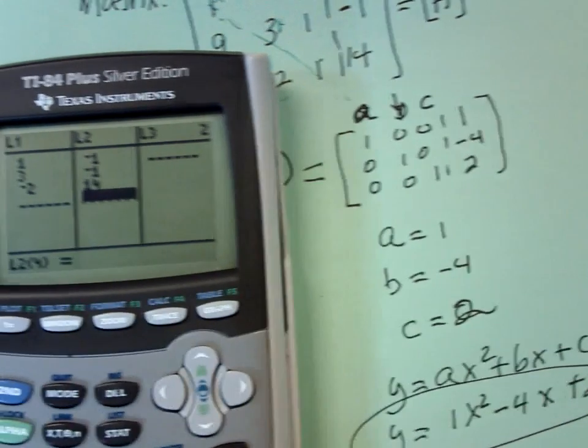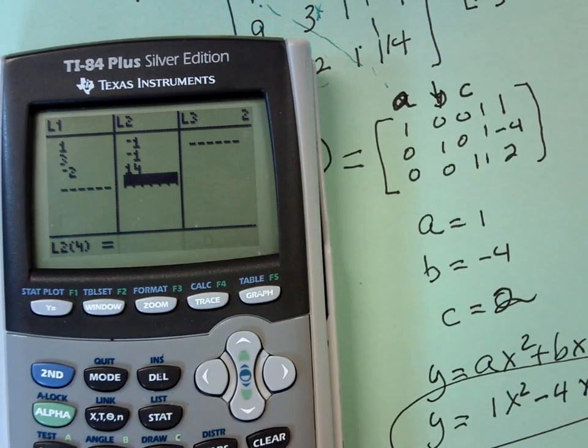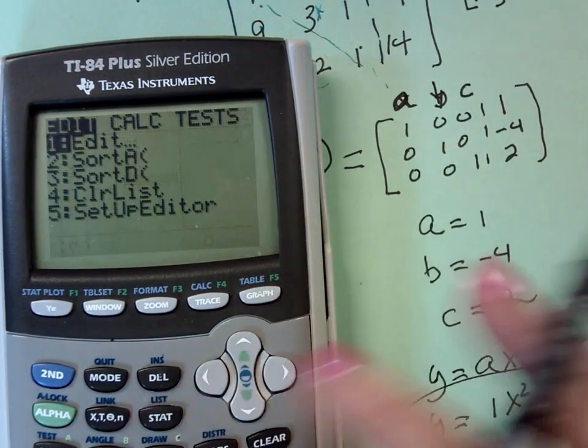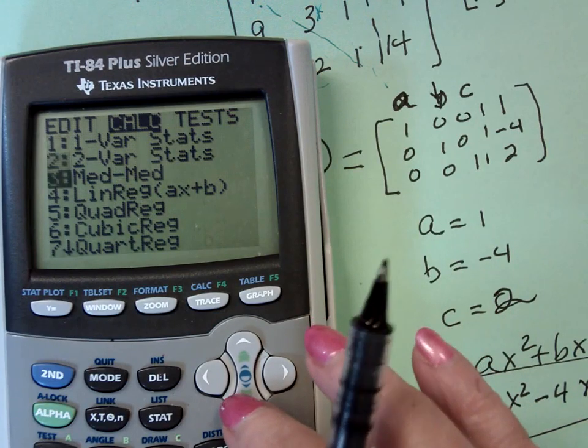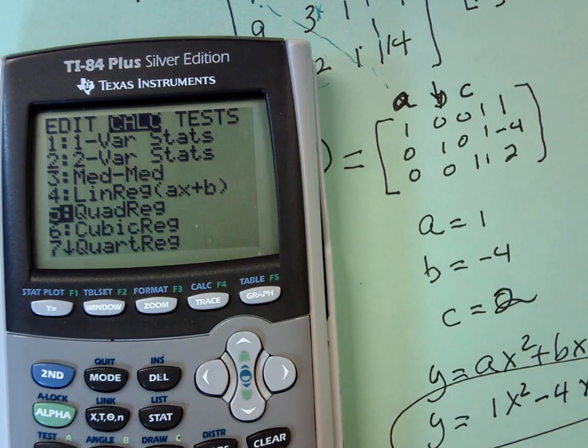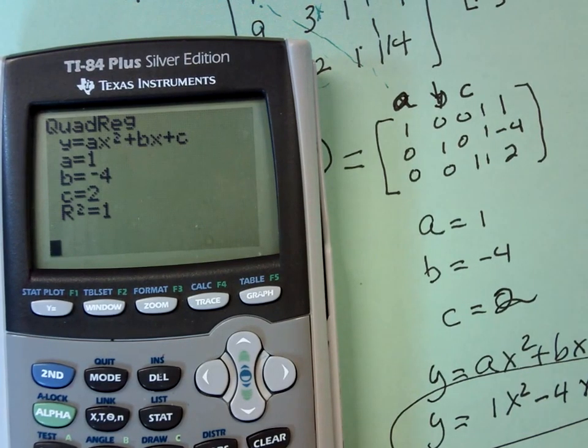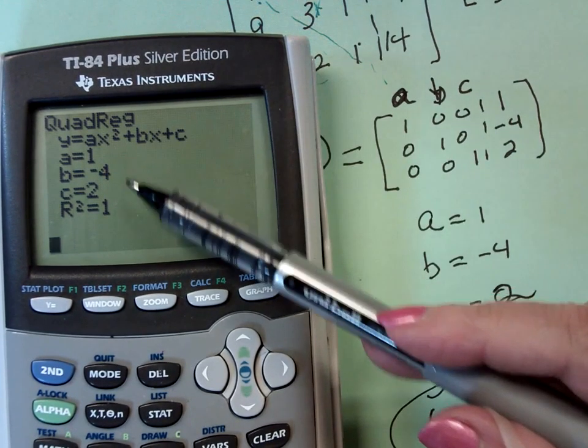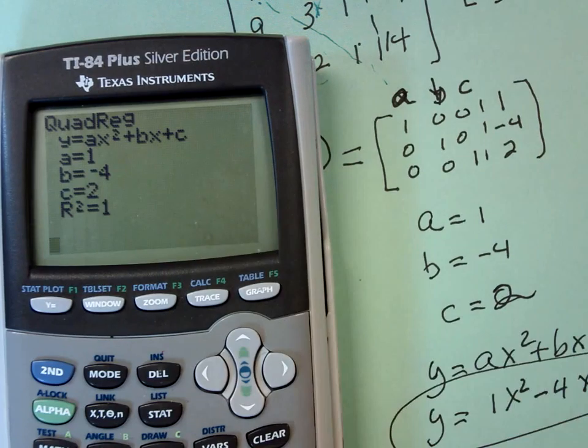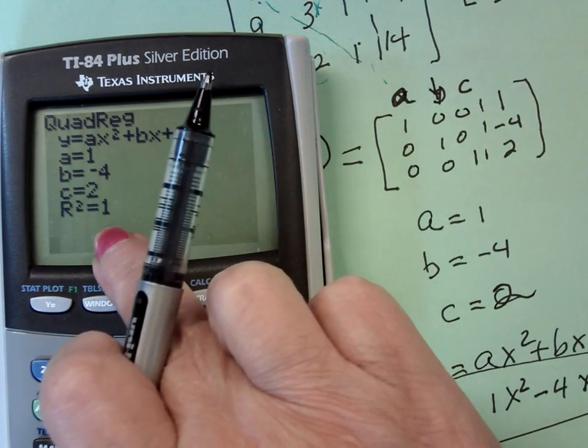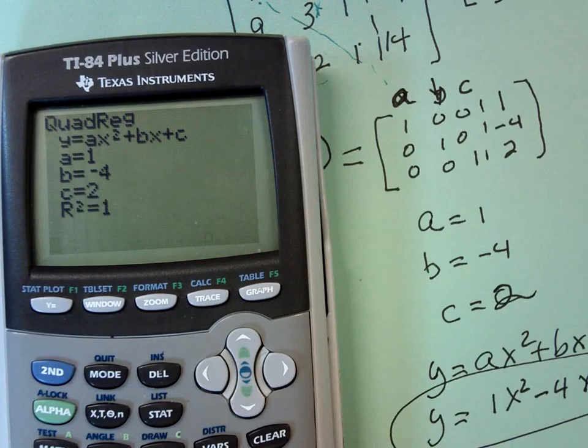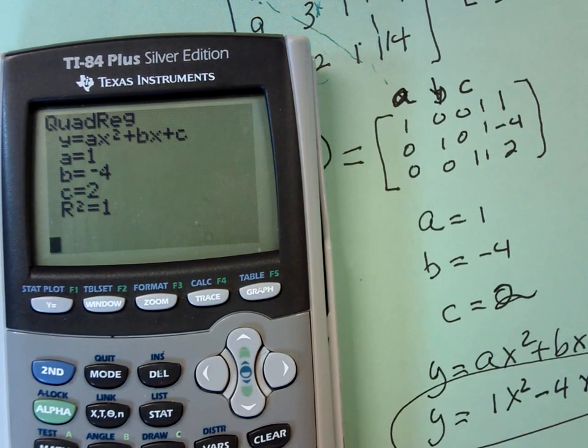So I'm in a stat menu now. And I'm going to do a quadratic regression. So stat, calculate, quad regression is a 5. And notice what you get. A is 1, B is negative 4, C is 2. And what is it? R squared is 1. I have a perfect fit. So you just did a quadratic regression.